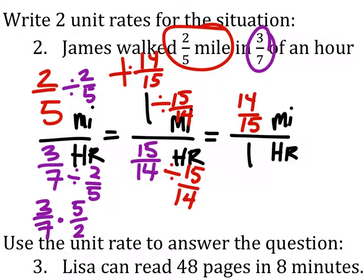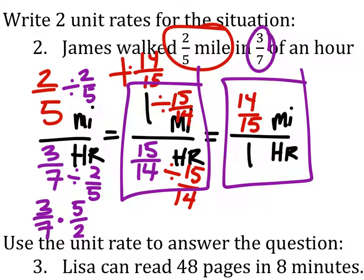One other thing you should remember — there's a shortcut for this. Once you've found one unit rate, you could have reciprocated the 15-fourteenths and gotten 14-fifteenths. We just flipped the fraction. But we do need to label everything. So it's 14-fifteenths miles per one hour, and one mile for 15-fourteenths hours. So just keep in mind, we put the miles in the numerator. If you put them in the denominator on this one, you'd be fine. Eventually we will have a unit where it will no longer be fine, specifically because the miles depends on the number of hours that has been walked.